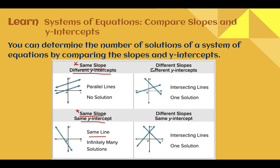If you come across equations that have different slopes, it doesn't matter if they have different y-intercepts or the same y-intercept — if you see different slopes, there is one solution. Their rates of change are not the same, so somewhere the two lines will intersect and you will get one solution.